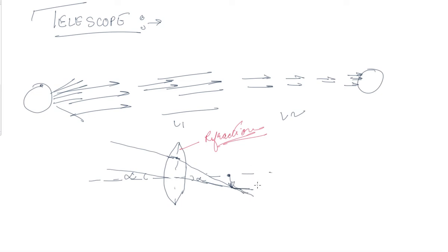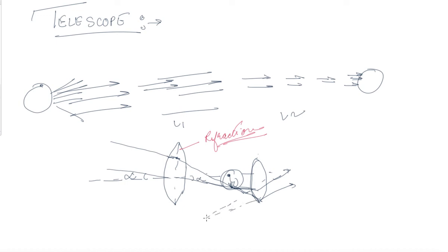At this particular crossing point we take a lens — a lens of smaller focal length placed over here. Now this ray after refraction will be directed back over here, and this ray after striking the surface will be refracted over here. The image formed over here appears to be at infinity, but what we see is the rays coming from infinity being focused in our eyes. This is the main working of the telescope.